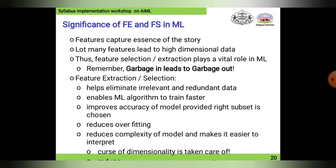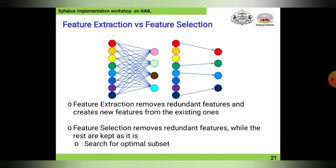Like garbage in leads to garbage out, feature extraction or selection helps eliminate irrelevant and redundant data. This enables machine learning algorithms to train faster, improves model accuracy when the right subset is chosen, reduces overfitting, reduces model complexity, makes the model easier to interpret, and takes care of the curse of dimensionality.